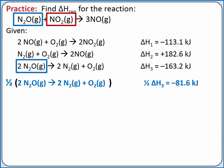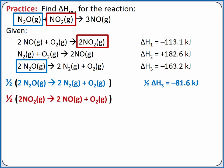Next, looking at nitrogen dioxide — the only reaction that contains nitrogen dioxide is the first reaction. We want one mole of nitrogen dioxide as a reactant, but in the first reaction we have two moles of nitrogen dioxide as a product. So we need to reverse reaction one and multiply it by one half. Since we reverse the reaction, we multiply the change in enthalpy by negative one, and since we multiply by one half, we also multiply the change in enthalpy by one half.